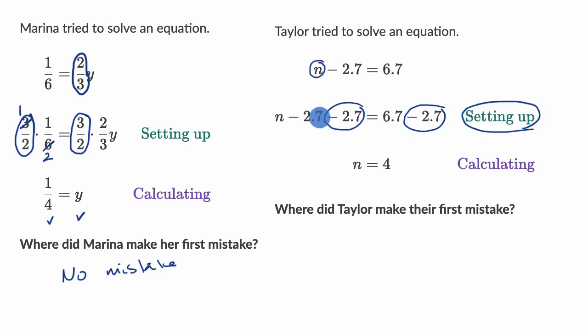Now, what Taylor did is not algebraically incorrect. You would end up with N minus 5.4 is equal to 4, but it's not going to help you solve this equation. You just replace this equation with another equivalent equation that is no simpler than the one before. And then of course, instead of getting N minus 5.4 equals 4, Taylor calculated incorrectly as well. But where they first started to get tripped up or at least not move in the right direction would be right over here.